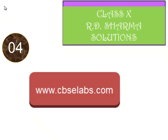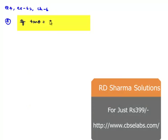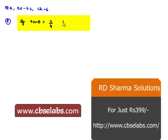Let us find the solution for question number 4, exercise 6.2 from chapter 6. The question is: if tan θ equals 3 by 4, then what is the value of (1 minus cos θ) by (1 plus cos θ)? So now let us move on to the solution.